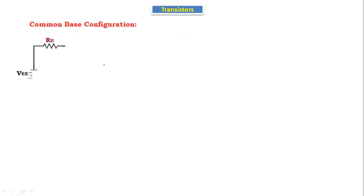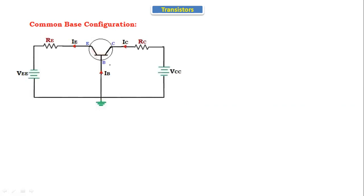Hello everyone. Today we are going to discuss about the common base configuration. Based on which terminal is connected to ground, there are three configurations: common base configuration, common emitter configuration, and common collector configuration. Today we will discuss about the common base configuration. Now let's see the circuit diagram of the common base configuration. This is a circuit diagram of common base configuration.